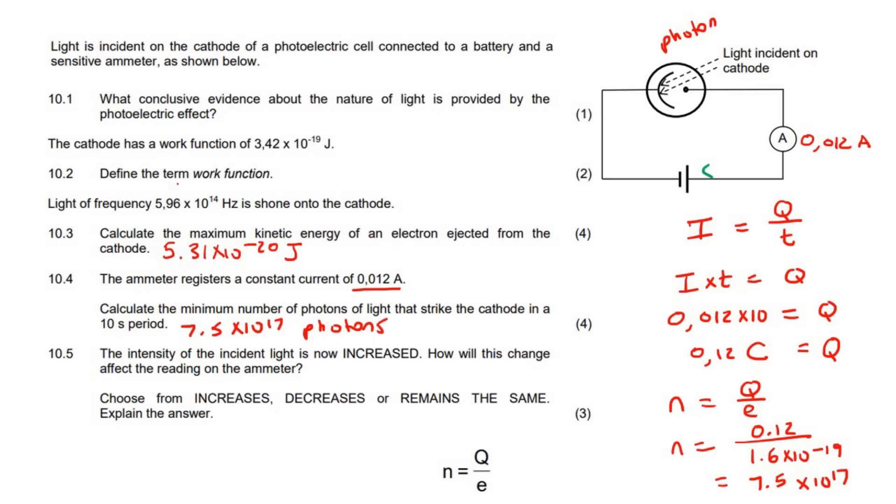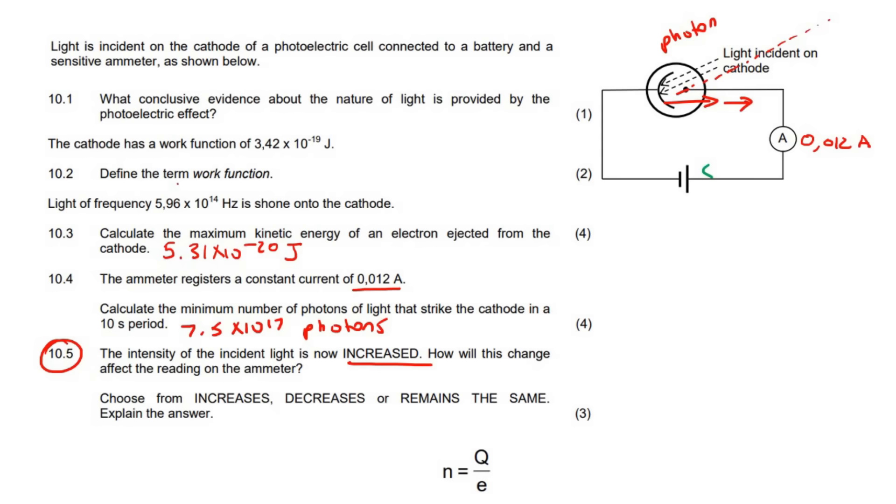This last question says, the intensity of the light is increased. When you change intensity, what it means is that there will be more photons. That means that there will be more electrons being released. If you have more electrons being released, you would have more charge, and so the current would go up.